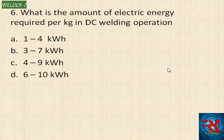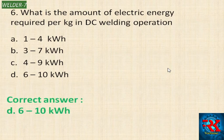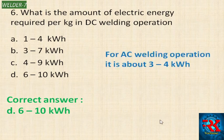What is the amount of electric energy required per kg in a DC welding operation? Per kg of metal deposition, the options are: 1 to 4 kWh, 3 to 7 kWh, 4 to 9 kWh, or 6 to 10 kWh. In DC welding operation, the required electric energy is approximately 3 to 4 kWh.